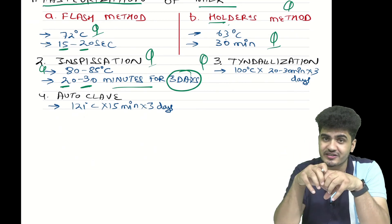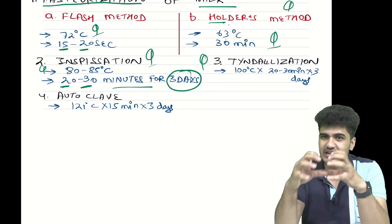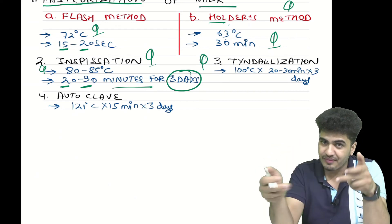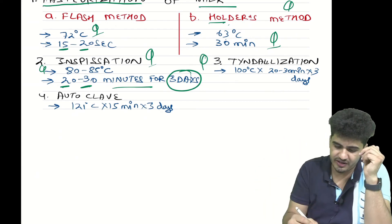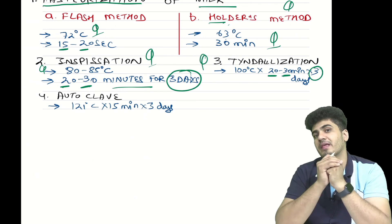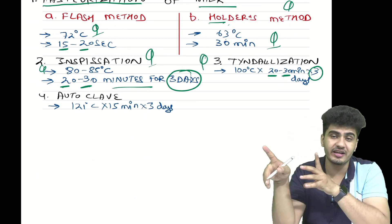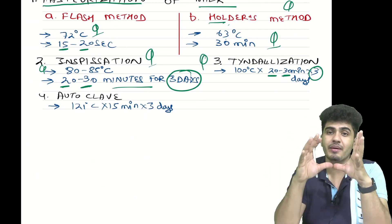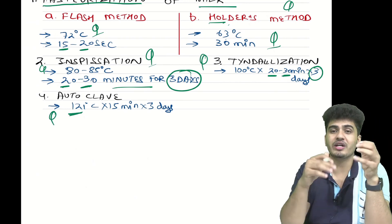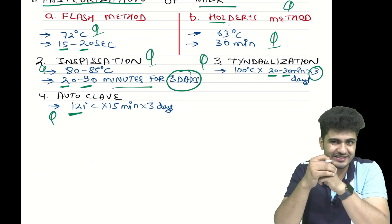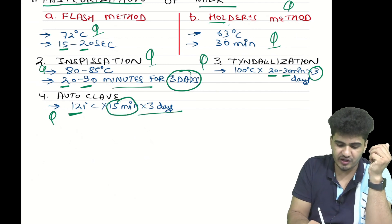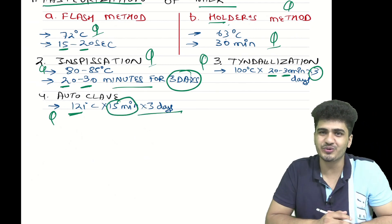Number three is tyndallization, which falls under the 100 degrees Celsius category. The temperature is 100 degrees Celsius and the timing is again 20 to 30 minutes for three days. Finally, in the more than 100 degrees category, we have autoclave. The temperature is 121 degrees Celsius and the timing is 15 minutes, repeated for three days.